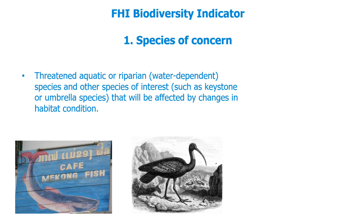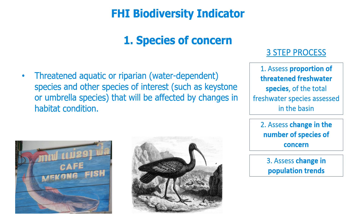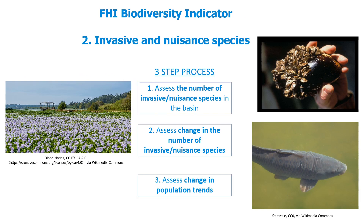The biodiversity indicator for the Freshwater Health Index includes two components. One focuses on changes in the presence of species of concern — specifically the proportion of threatened species present, the change in number of species of concern over time, and changes in their population sizes. The other component focuses on changes in abundances of invasive species, in much the same way as the process for proportion and change in threatened species. The component used most is the first one, looking at threatened species of concern.